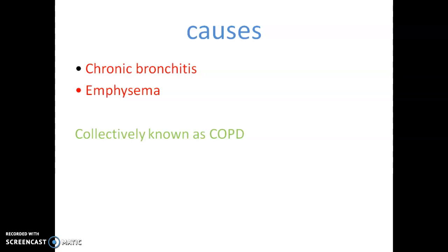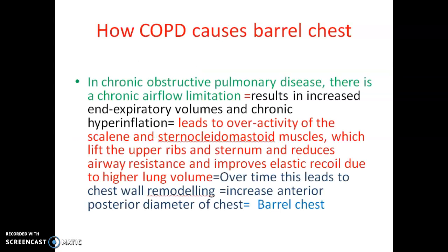Chronic bronchitis and emphysema are collectively known as COPD. In chronic obstructive pulmonary disease, there is chronic airflow limitation, resulting in increased end-expiratory volumes and chronic hyperinflation. This leads to over-activity of the scalene and sternocleidomastoid muscles, which lift the upper ribs and sternum, reducing airway resistance and improving elastic recoil due to higher lung volume.